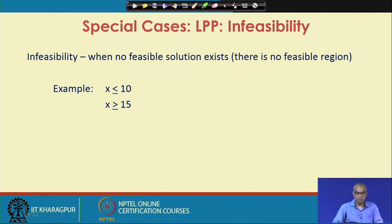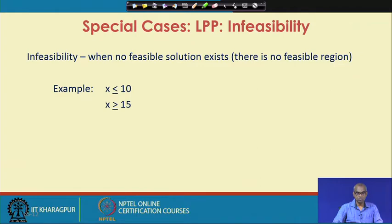Let us consider infeasibility. A linear programming problem is infeasible when no feasible solution exists — there is no feasible region. For example, if you have constraints x ≤ 10 and x ≥ 15, it is clearly not possible to have any feasible solution, and the linear programming problem will be infeasible.